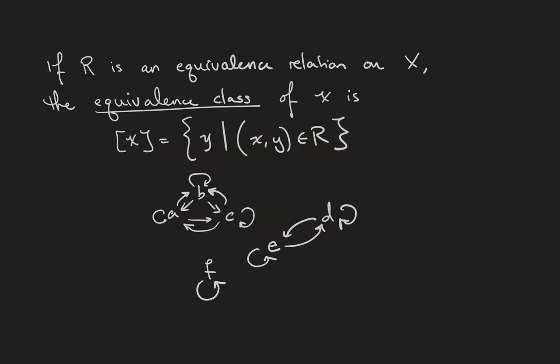If R is an equivalence relation on the set X, we define the equivalence class of the element x, denoted by brackets around the element x, to be the set of all y such that y is related to x in the equivalence relation.